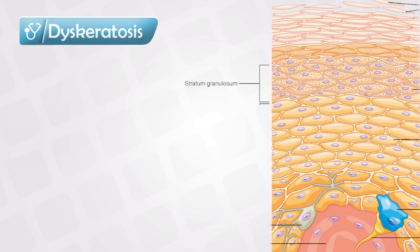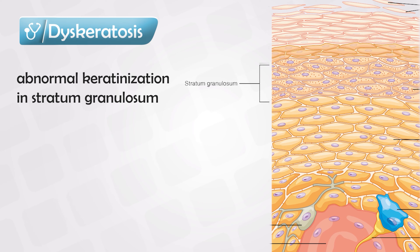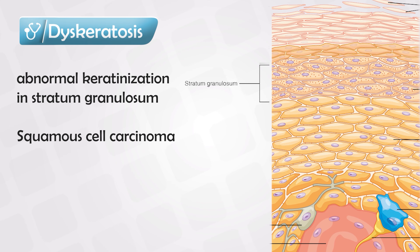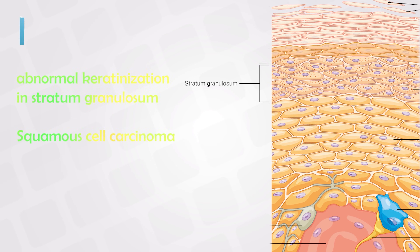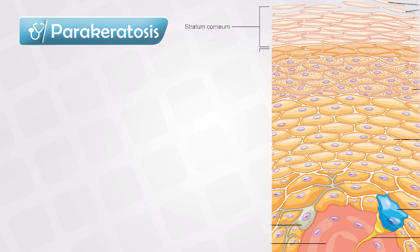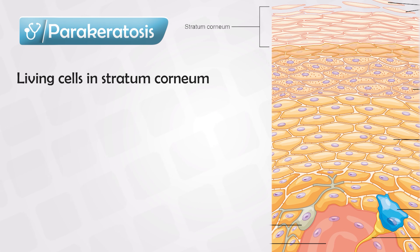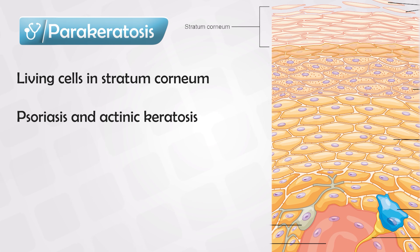If there is abnormal or premature keratinization, this is known as dyskeratosis, and it is a sign of squamous cell carcinoma. The uppermost stratum corneum is formed by dead cells and should not have any nuclei, but if it does, this is known as parakeratosis — a sign of psoriasis and actinic keratosis, which is potentially cancerous.